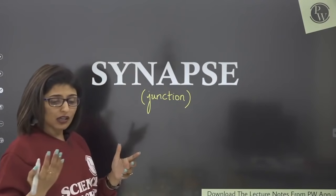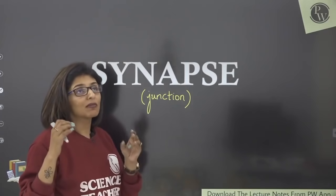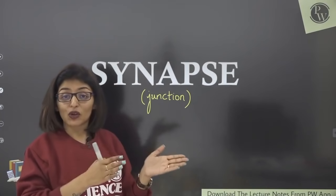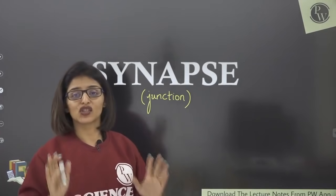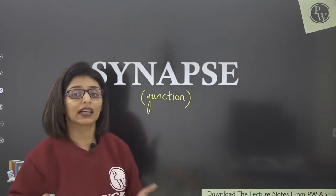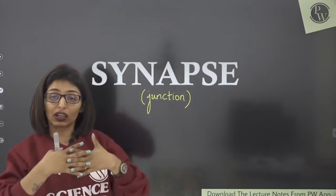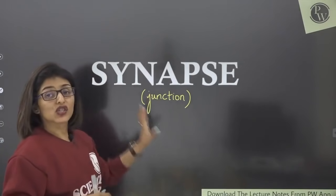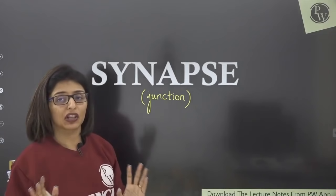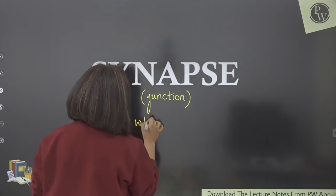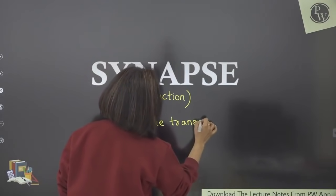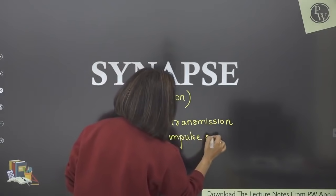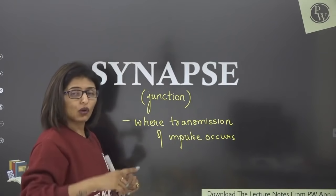Synapse means junction or bridge, which connects two things. There is no physical connection where two neurons actually touch each other — it can be of two types. Synapse is the junction where two neurons communicate. This is where transmission of impulse occurs — it jumps from one neuron to another.